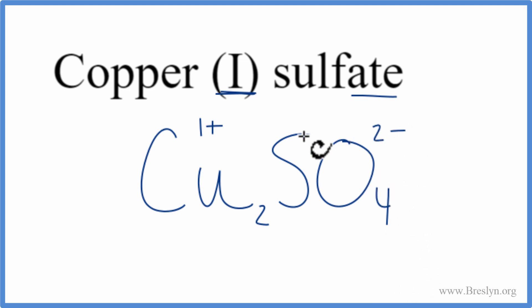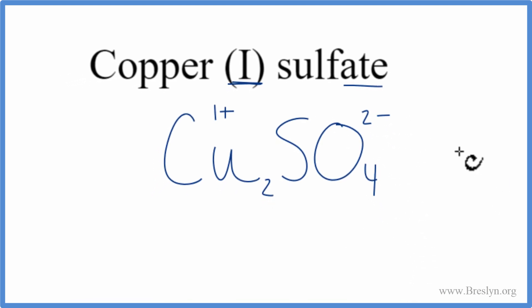So I have 1 sulfate ion, that's 2 minus. And I have 2 copper ions, 2 times the +1, that's 2 plus. So 2 plus and 2 minus, that adds up to zero. So this is the correct formula for copper(I) sulfate.